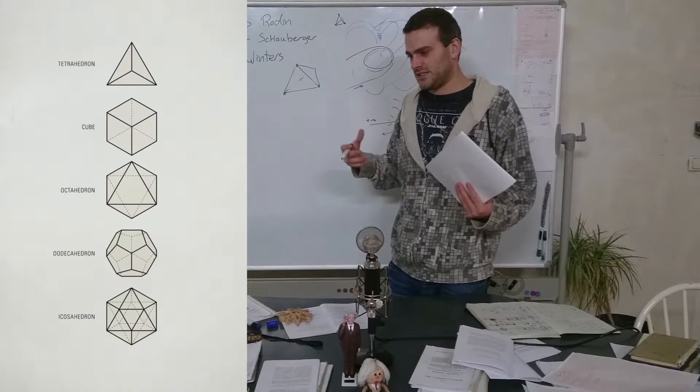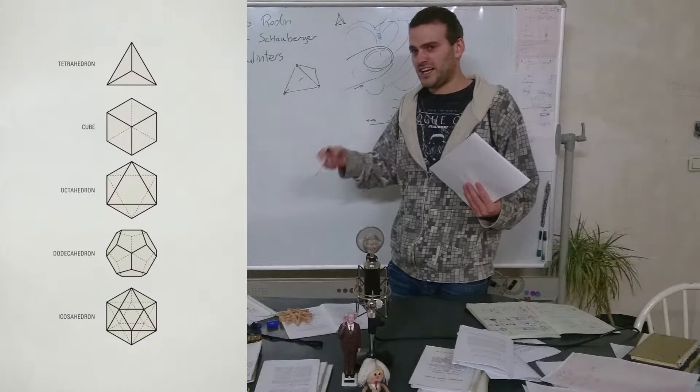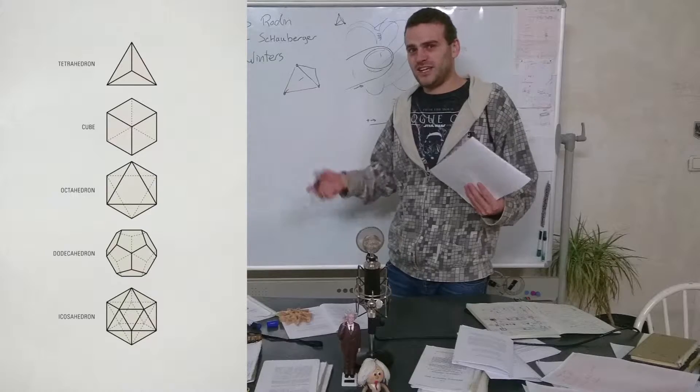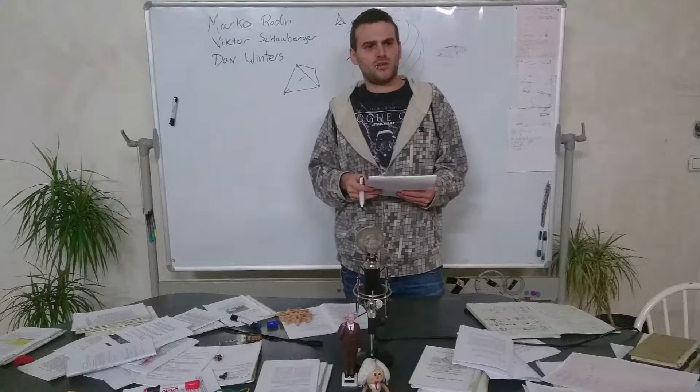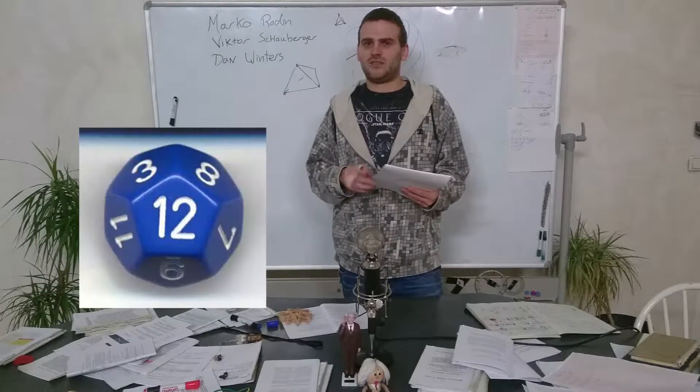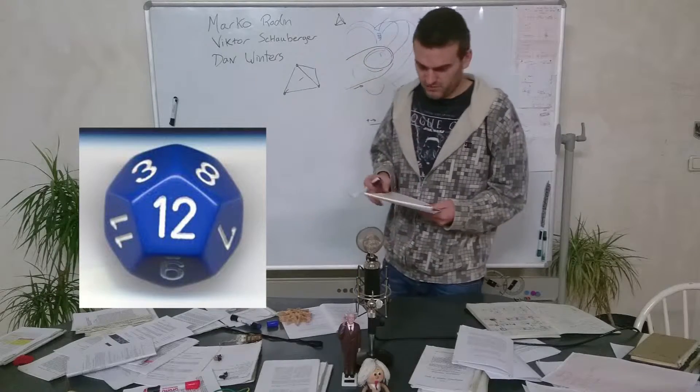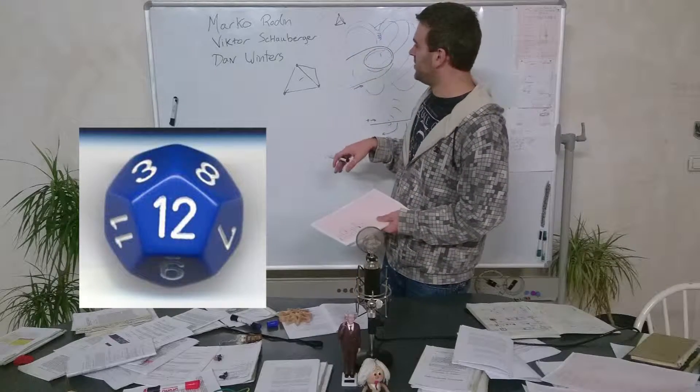And so that means dodeca means do, two, deca, ten. So it's 12 shaped. I don't know, is it a cube? No, it's not a cube. It has 12 planes in one thing, one shape - the dodecahedron.